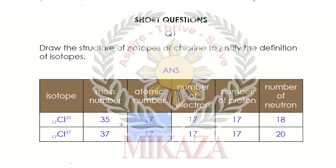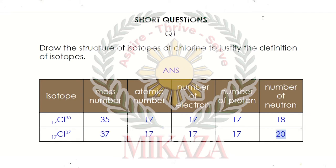In both isotopes the atomic number is 17 — mass number 1 is 35 and the second mass is 37. According to the definition of atomic number, the number of electrons and protons equals the atomic number, which is 17. Chlorine has atomic number 17, meaning the number of electrons and protons is 17. The first isotope has 35 minus 17 = 18 neutrons. The second isotope has 37 minus 17 = 20 neutrons. We have two structures: the first isotope is Cl-35 and the second is Cl-37.